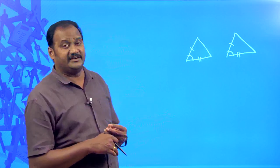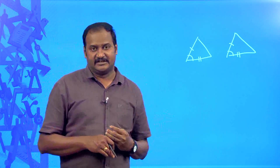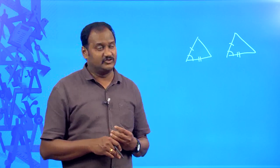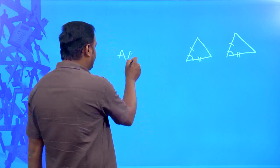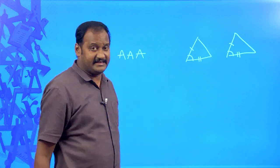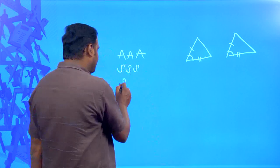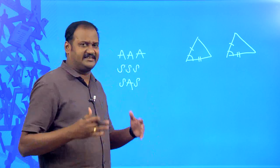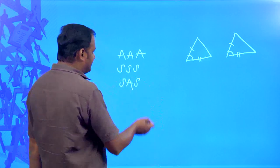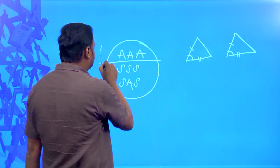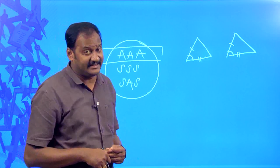Now I am going to explain when two triangles are said to be similar. There are three conditions — three similarity criteria — for two triangles to be similar. Those three conditions are: AAA similarity, SSS similarity, and SAS similarity. Let us try to understand them. These are called similarity criteria, and there are totally three similarity criteria.